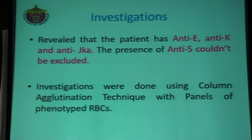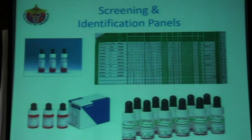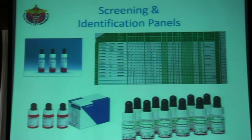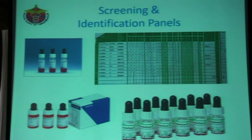Investigation was done using column agglutination technique. You can use whatever is available from the screening and identification panels — different companies are available. But be strict to the standard operating procedure for each company regarding reagent use, incubation time, and temperature. These are the panels available; you can prepare your own screening and identification panel. This is very beneficial because you will use antigens that represent your own community or patient population. If you have the facility to prepare your own panels, it will be much more beneficial — it avoids delays or deterioration during transportation, and is also cost effective.